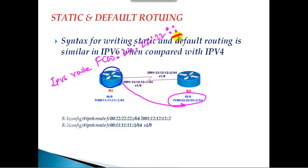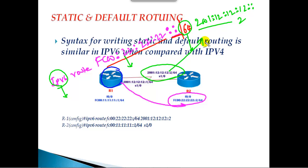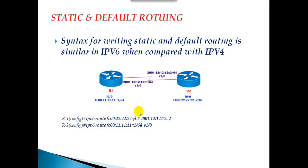The double colon means the host portion is all zeros — representing the network ID. Then we write the subnet mask as /64 and the next-hop IP address, for example 2001:12:12:12::2. The syntax is almost the same as IPv4 — instead of 'ip' we write 'ipv6', the destination ID is the same, instead of 255-based subnet mask we write a slash value, and then the next-hop address or our own exit interface such as S1/0.